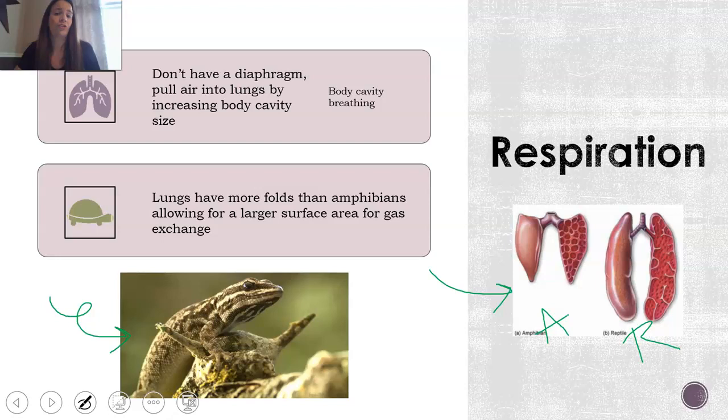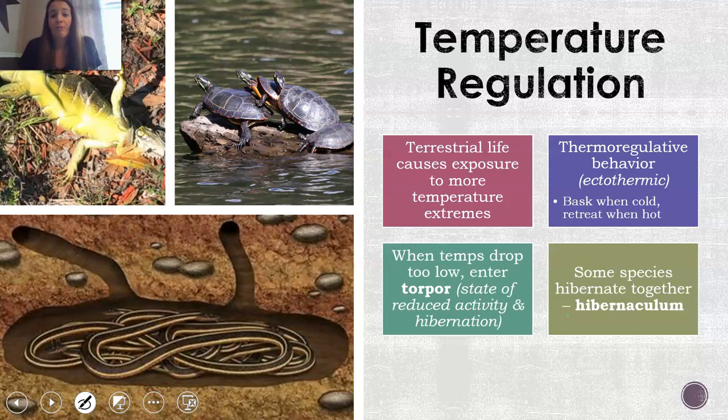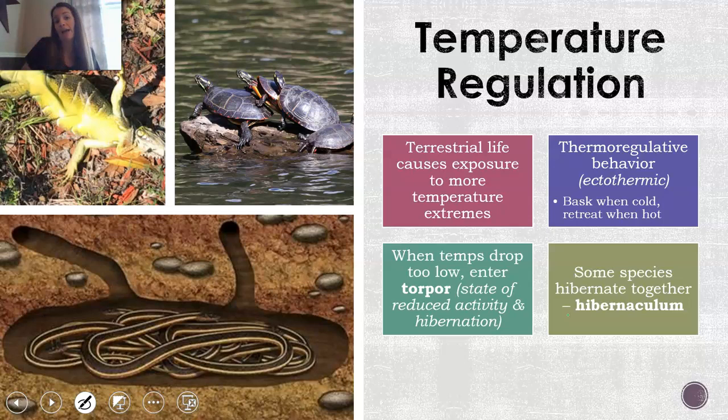Temperature regulation is also something reptiles have to deal with, just like amphibians. Being in a terrestrial environment most of the time causes exposure to more temperature extremes — amphibians are usually around water, which stays at a more consistent temperature, but on land you deal with more extremes. Reptiles bask when cold to warm up and go into shade when hot. However, if the temperature drops too low, something called torpor can happen, where activity reduces and hibernation occurs.